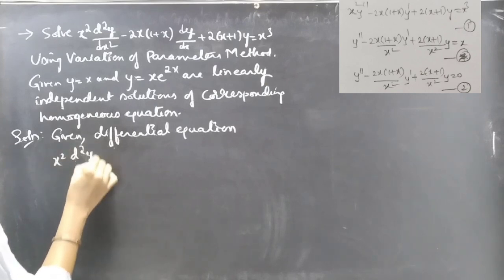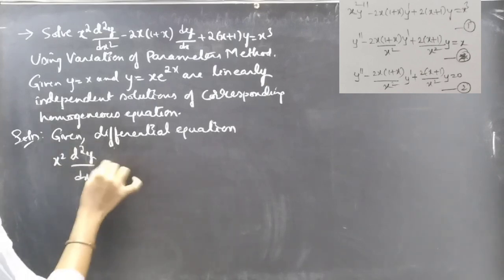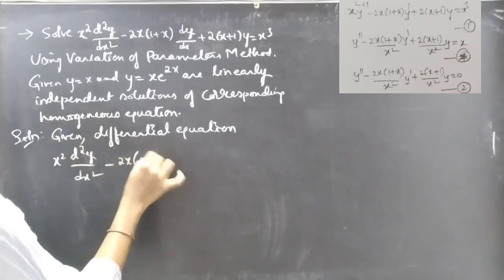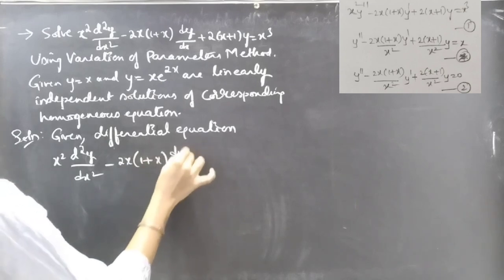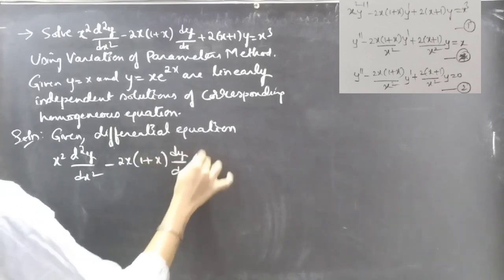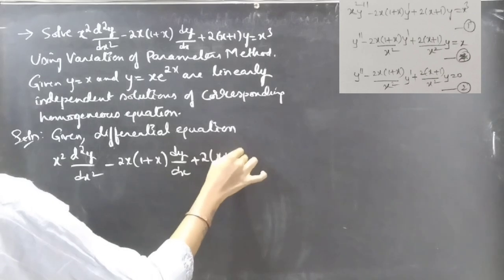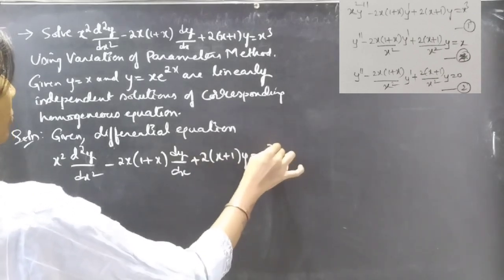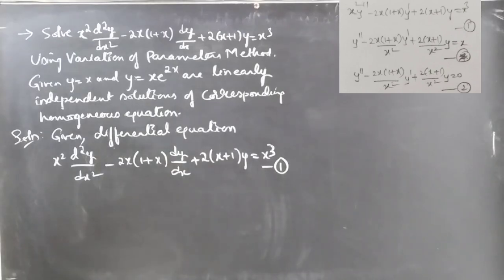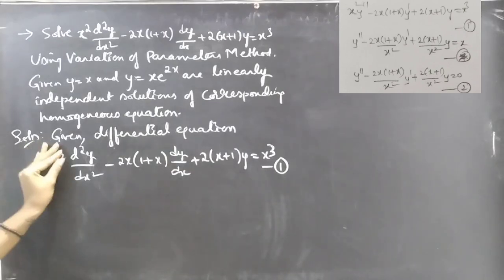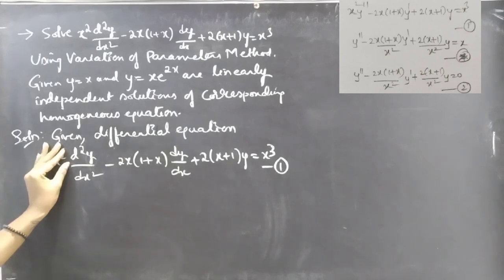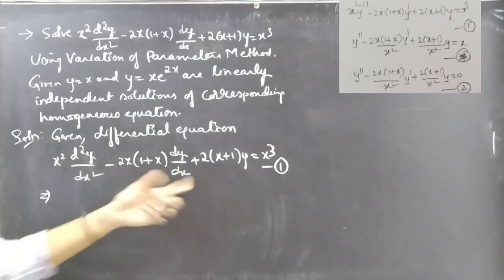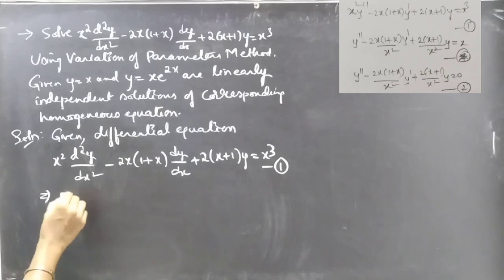The given differential equation is x² d²y/dx² minus 2x(1+x) dy/dx plus 2(x+1)y equals x³, consider this as equation 1. To write this in standard form, we make the coefficient of d²y/dx² equal to unity by dividing both sides by x².